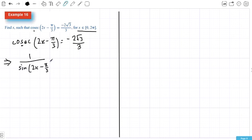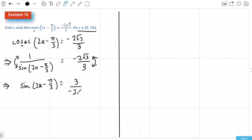Alright, so we can deal with sine. And what we're going to do is get sine on the top line. So I'm going to flip this fraction over. So we've got sine of 2x minus π on 3 equals, and we're going to flip this over as well. So we're going to have 3 on negative 2 root 3.